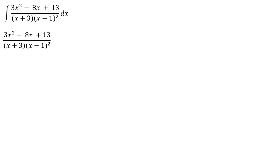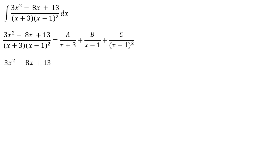We set up the partial fraction decomposition: (2x² - 8x + 13) / ((x + 3)(x - 1)²) equals A/(x + 3) plus B/(x - 1) plus C/(x - 1)². So 2x² - 8x + 13 equals A(x - 1)² plus B(x + 3)(x - 1) plus C(x + 3).